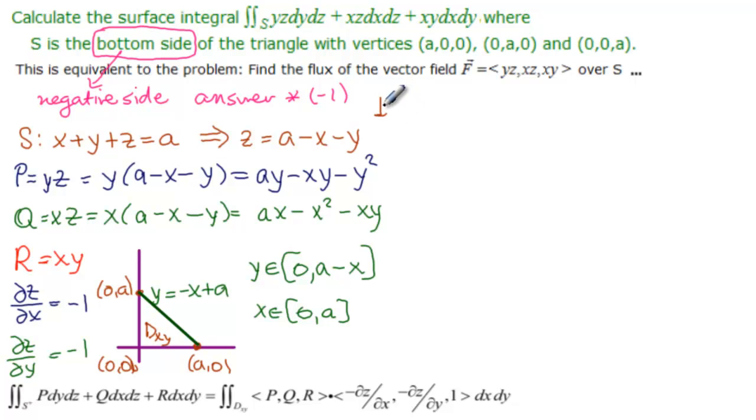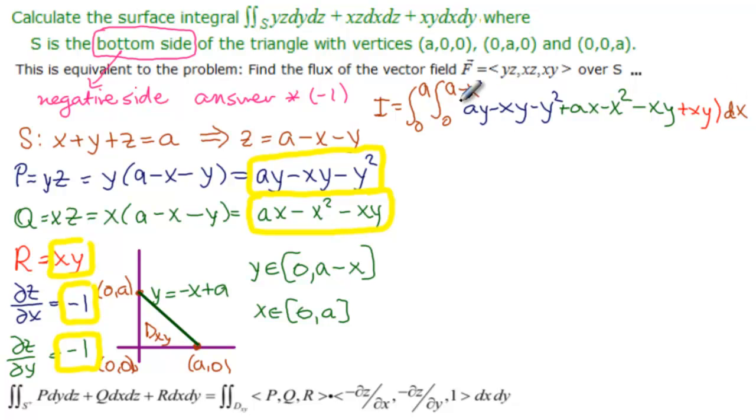Our integral becomes integral from 0 to a dx, integral from 0 to a minus x dy. And then we need to do this scalar product. So the first one is P times minus 1, so it's ay minus xy minus y squared. And then we have Q times minus 1, so it's plus ax minus x squared minus xy. And our last one is just xy times 1, so just plus xy. And we can see that our last two things cancel out, but nothing else does.